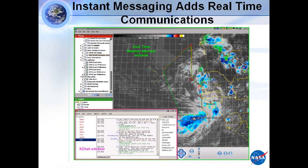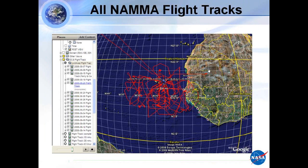Here's another spaghetti diagram showing post-mission display. These were all the NAMA flights — right here are the transit flights in and out, and these are all the science flights, including flights out over Mauritania and West Africa. All these different layers you can click on or off.